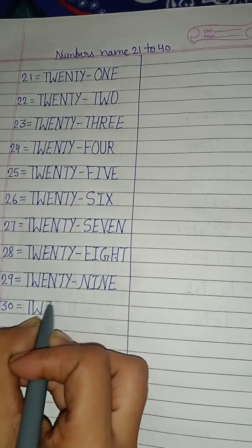39 — T H I R T Y, 30; N I N E, 9. 39. Next: 40 — F O R T Y. 40.